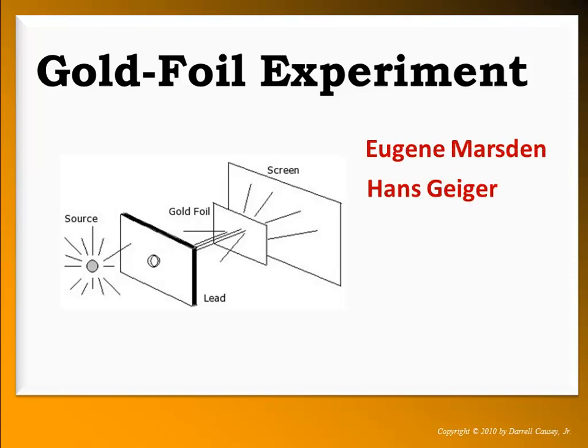Eugene Marsden and Hans Geiger actually did the experiment. They were students of Ernest Rutherford. He gets the credit, but they performed the experiment. I like to point that out — kind of a little history thing. Eugene Marsden and Hans Geiger were both great scientists in their own right as they moved on in history.